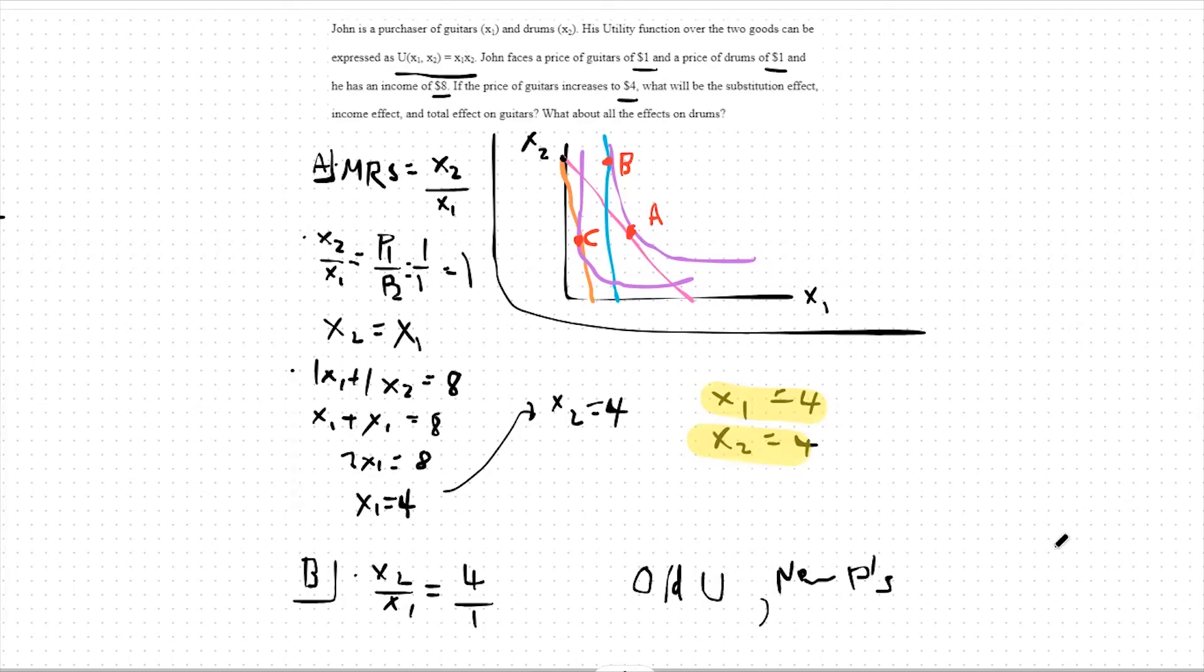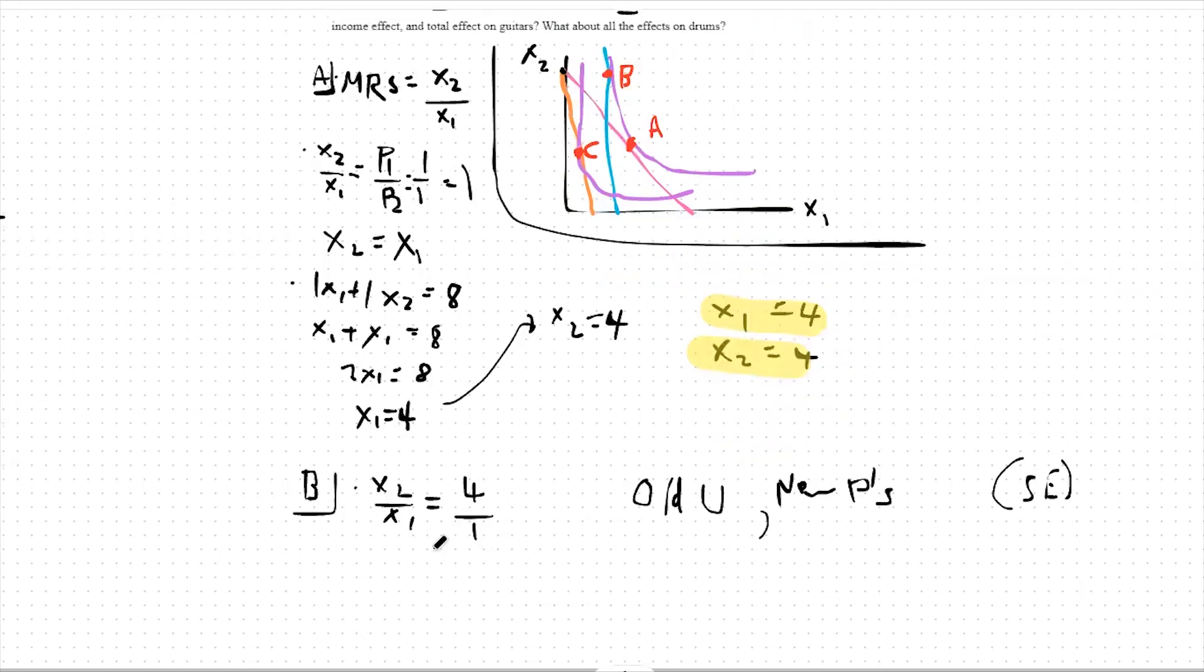So, point B, or the substitution effect, will be the point at our old utility but our new prices. Notice how the budget constraint is steeper than before. This is because our formula for the budget constraint is P1 over P2. P1 went up, so our slope of our budget constraint became relatively steeper. With this in mind, we can say x2 now equals 4x1 instead.